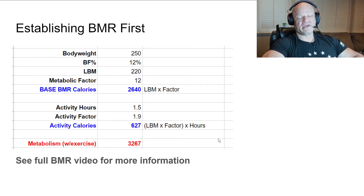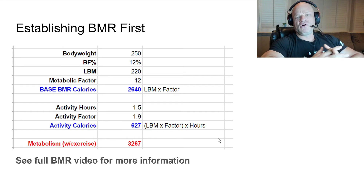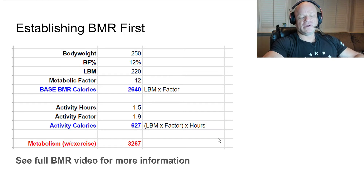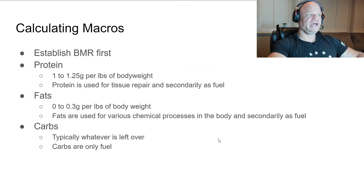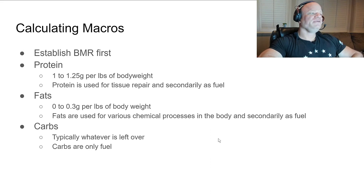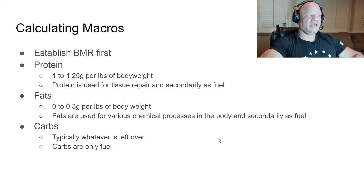It may even be around 3,500 where I start losing weight. Watch the full 'How to Calculate Your BMR' video if you want all the details on it. Once we have that established, we can start building our diet. First things first — we need to calculate our macros.